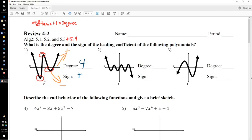Number 2, same idea. 1, 2, 3, 4, 5, 6, so the degree has to be at least 7 or more. Alright, and the sign in this case is negative. Why is it negative? Because it's going down and to the right.